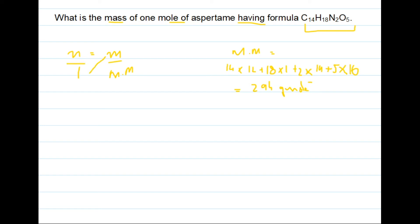Now we have this formula. After cross multiplying, because we need mass not number of moles, we will get mass in grams equals number of moles multiply by molecular mass. As you can see from the question, the number of moles is 1, so we write 1 mole multiply by molecular mass which is 294 grams per mole.